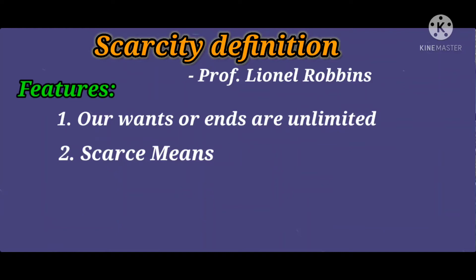At an individual level you face many problems because of scarce resources — you have limited income and limited time. This is also applicable for a nation and an economy. An economy, like an individual, has also numerous wants — a bundle of wants — for example construction of roads, railways, industries, and providing basic services like education, health and housing to people in a welfare state. Due to unlimited wants and limited resources, this leads to the problem of choice.